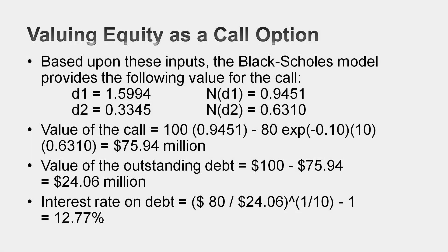I plug them into my option pricing model — the Black-Scholes model. The value I get for the call option is $75.94 million. If I view equity in this company as an option, it's worth $75.94 million. The overall value of the company is $100 million. Subtracting out the equity value gives a value for the debt of $24.06 million. That's a zero-coupon bond with $80 million face value, and $24.06 million is the market value of the bond today. With those two numbers, I can back into an interest rate of 12.77%, meaning a default spread of 2.77%.